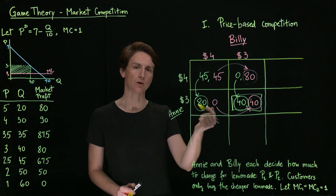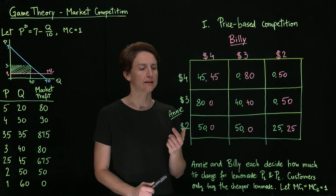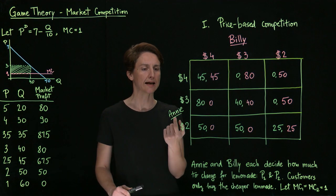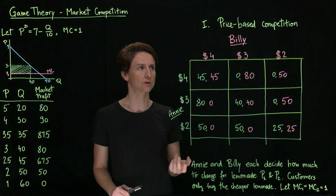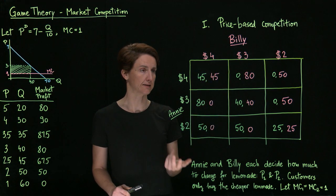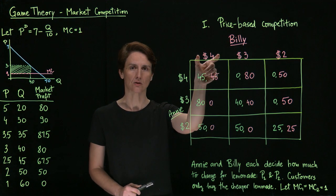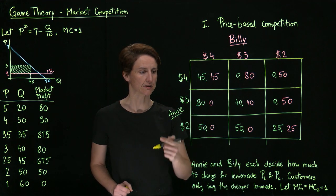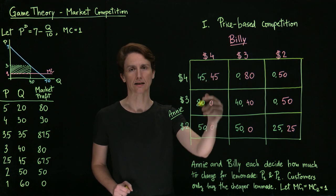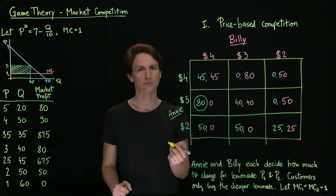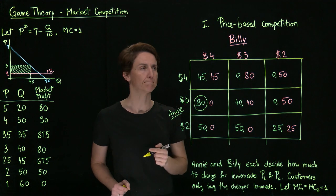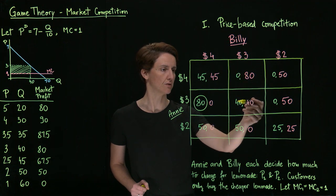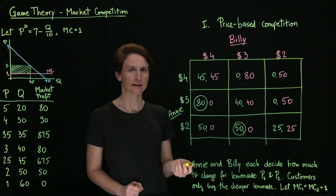Now, what if we allow for more possible values of price? Annie and Billy each now have three possible options for where to set price. Let's see what Annie's best response is in each of the three possible states of the world. If Billy priced at $4, Annie's payoffs would be $45 if she also priced at $4, $80 if she priced at $3, or $50 if she priced at $2 — so her best response when Billy prices at $4 is to price at $3. If Billy sets price at $3, we compare Annie's payoffs of $0, $40, and $50, meaning her best response in that case is to price at $2.